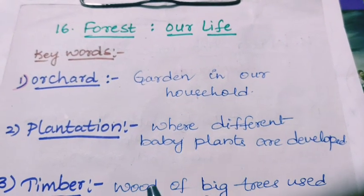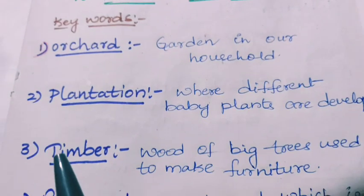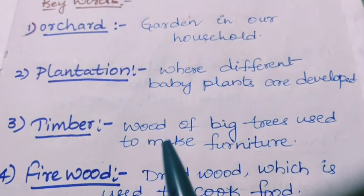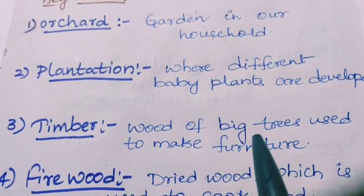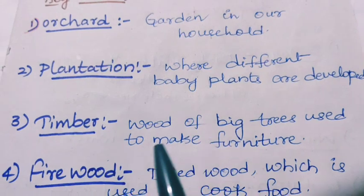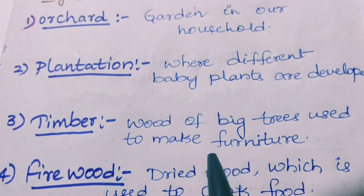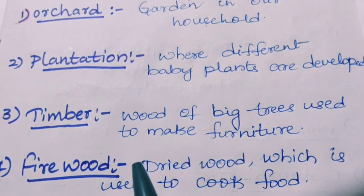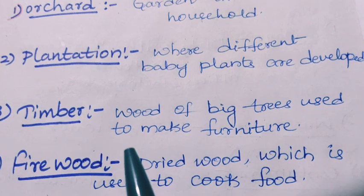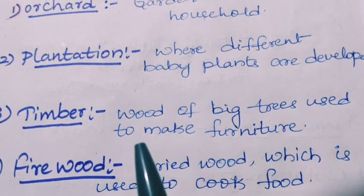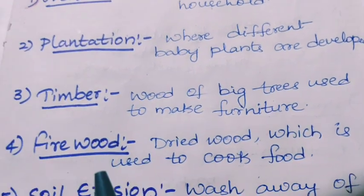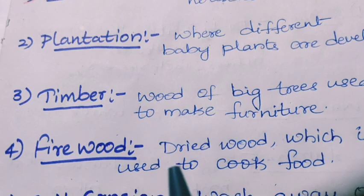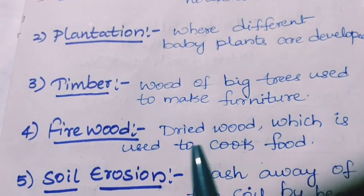Timber: wood of big, that is large, trees used to make furniture — that means we use the wood to make tables, benches, chairs, and like that. Firewood: it is a dried wood which is used to cook food.